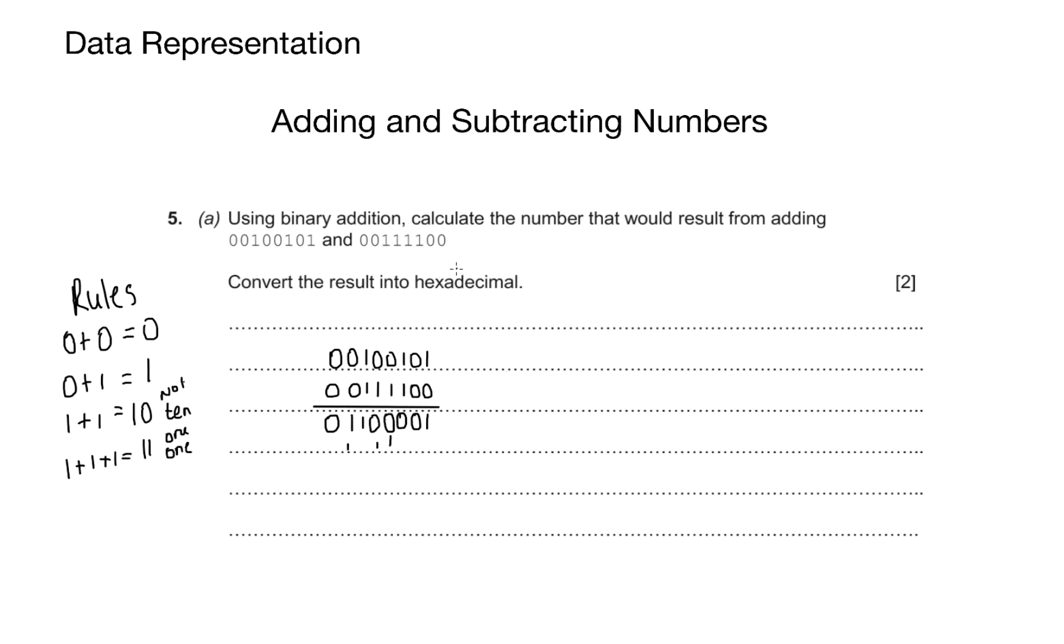Now I've got my final answer. I'm just going to rewrite it out. The question wants me to convert the result into hexadecimal notation. Like we learned in the previous lessons, I'll write down my full 8-bit number and I'll split it into 2 nibbles and work out the hexadecimal.